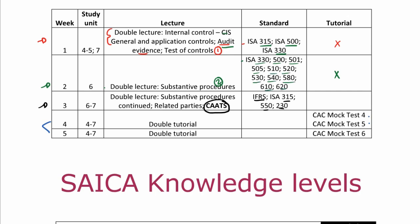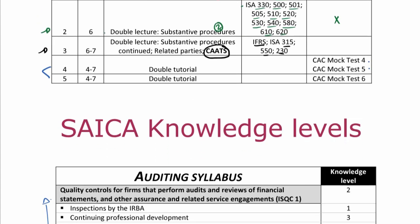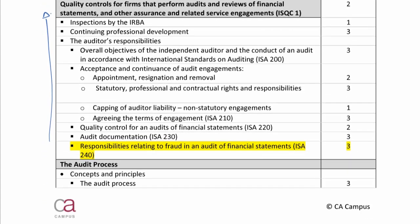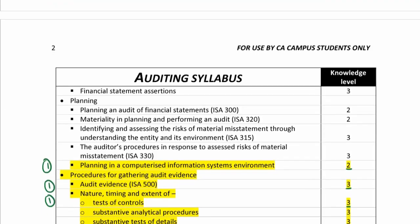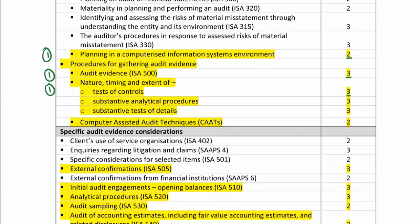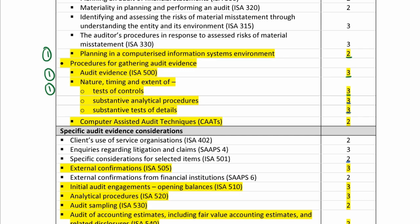In terms of the knowledge level that SAICA requires for each of those standards: ISA 500, audit evidence, is a level three — we addressed it in week one and we're also addressing it in week two. Underneath that we look at the actual procedures: substantive analytical procedures addressed in week two is a level three, as well as your test of details, also a level three. So I need to spend a lot of time on these procedures.